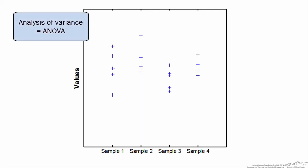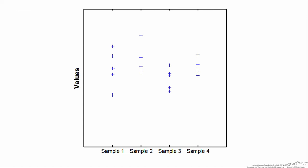What an analysis of variance does is help you decide whether or not the population mean for one of these samples differs from the others. For example, for this plot, sample two's values tend to look a little bit higher than the other ones. Is it substantially higher? Can we conclude that sample two came from a population mean that is indeed different than the population means for samples one, three, and four?